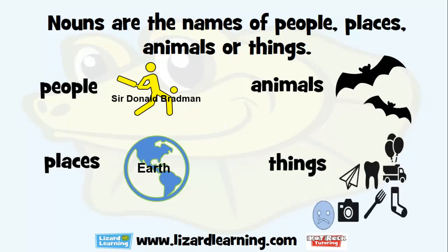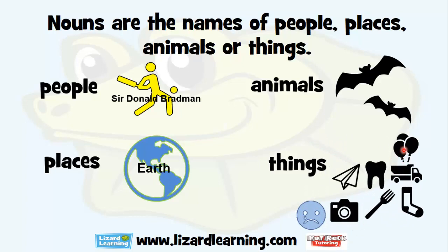We have balloons, trucks, sock, fork, tooth, a paper plane, camera. Another thing that are nouns are feelings and emotions. So 'sadness' would be the name of a feeling. Camera — the name of a thing. Paper plane — the name of a thing. Tooth — the name of a thing, and my tooth still hurts from being to the dentist. Fork — name of a thing. Balloons — name of a thing. Truck and sock — names of things.